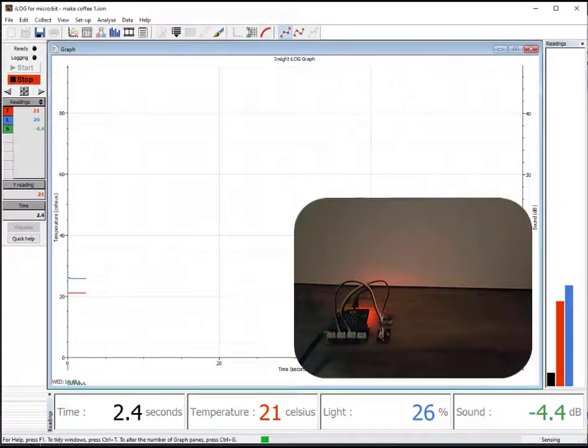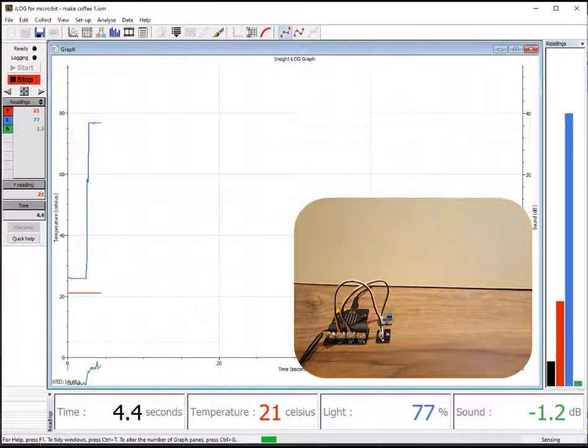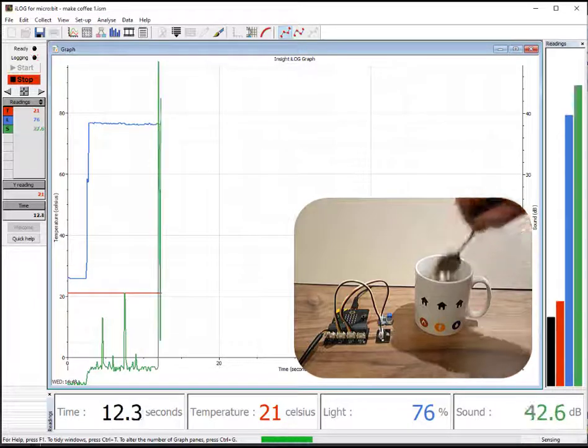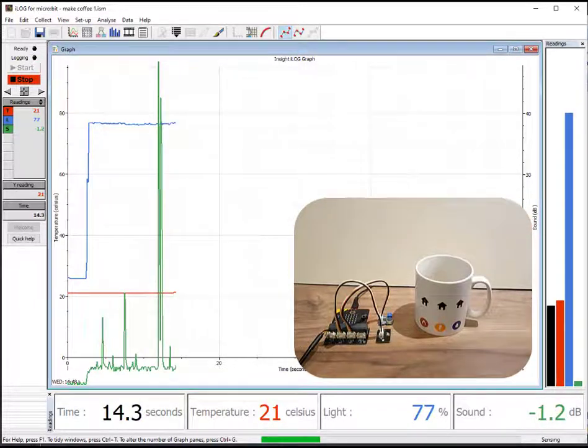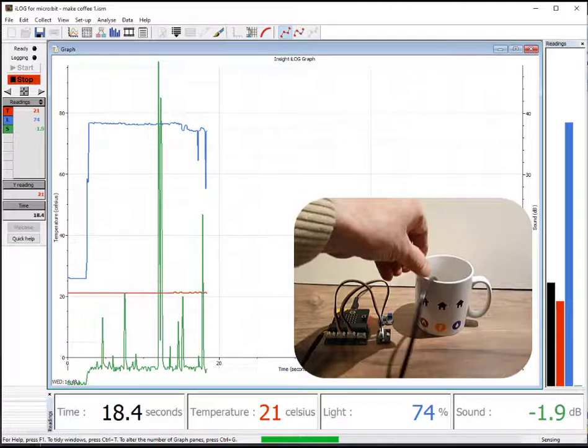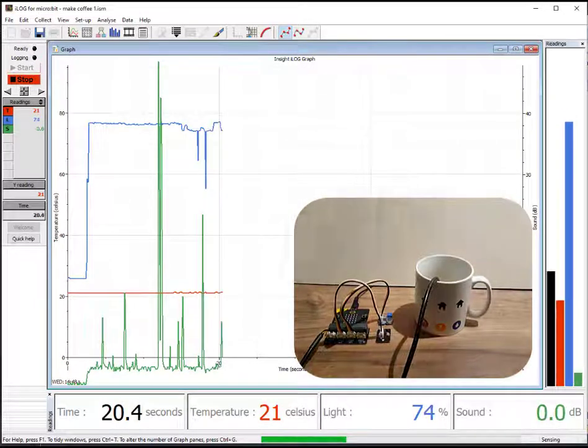The light sensor detects when we switch on the light. The sound sensor detects placing the cup on the table. The temperature sensor shows us how hot the coffee is.